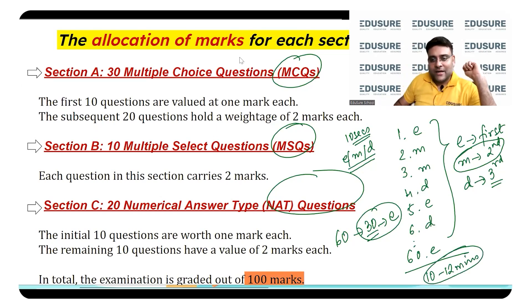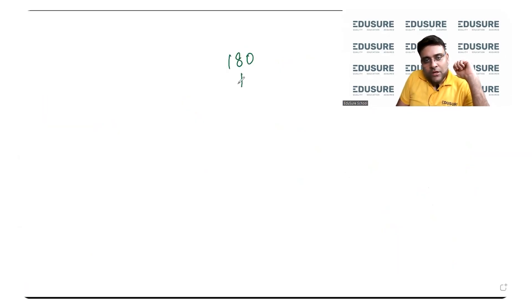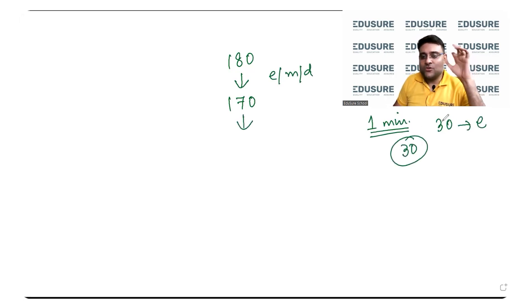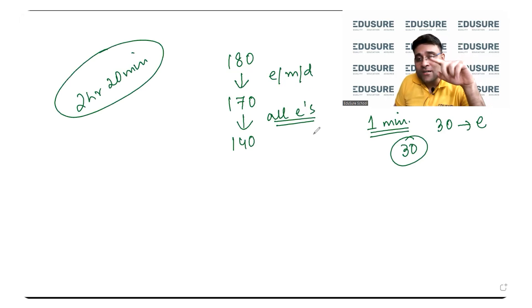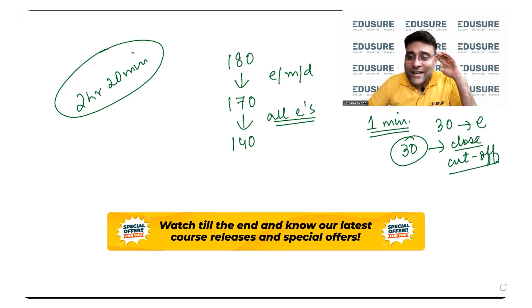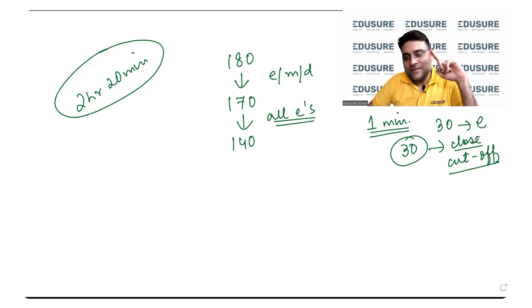So out of the 180 minutes that you have, you invest 10 to 12 minutes, left with 170 minutes, and you have already analyzed EMD. Now the questions that are easy for you will take you maximum one minute to solve. Supposing you get 30 E's, you spend 30 minutes and solve all the E's. How many minutes are you left with? 140 minutes. You yet have 2 hours 20 minutes and you have already ensured that you are close to the cutoff. This sounds extremely optimistic, but can this happen? A big yes.